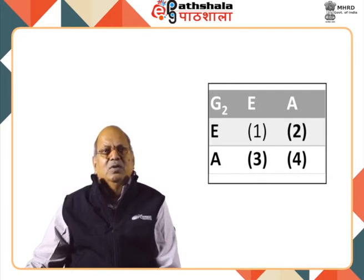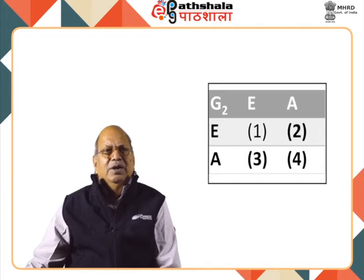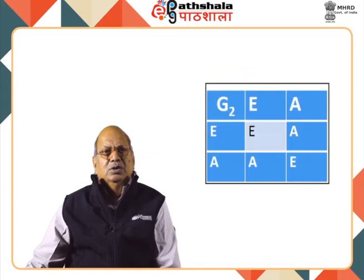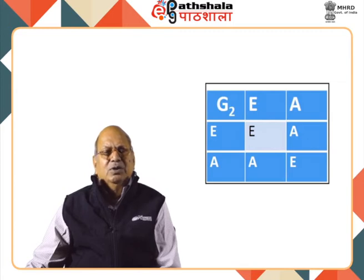We have to find entries 1, 2, 3, and 4. These elements can be obtained by taking the products of the type AB — start from right, go to left — as follows. Element 1 is E·E = E. Element 2 is A·E = A. Element 3 is E·A = A. Element 4 is A·A = E. So the complete G2 group multiplication table has rows and columns: E, A and the entries E, A, A, E.